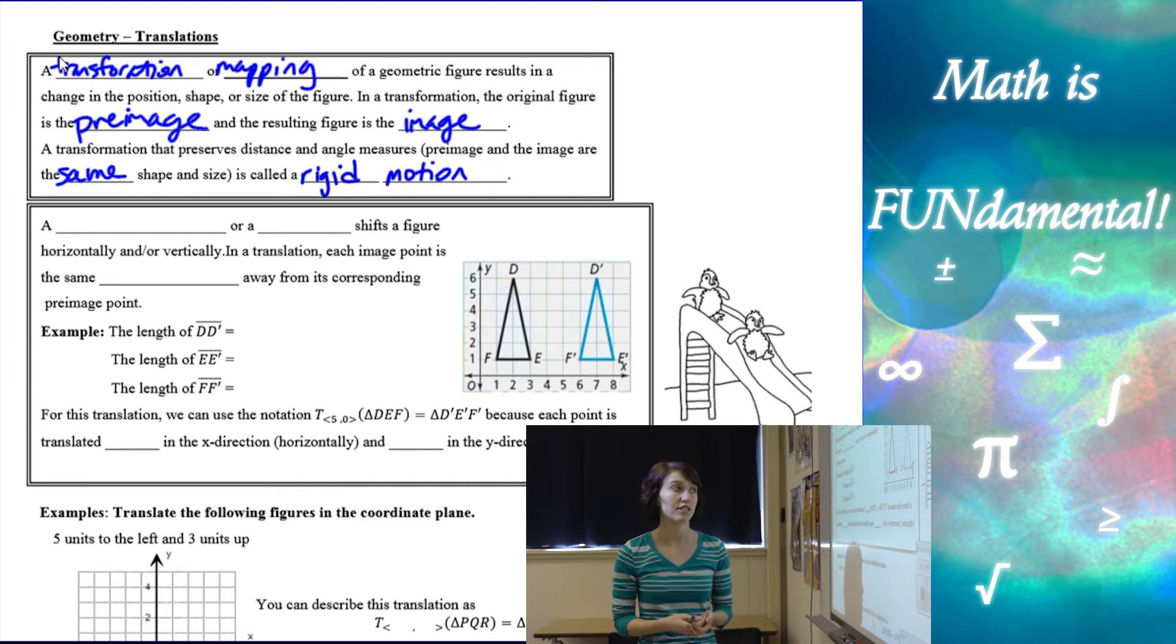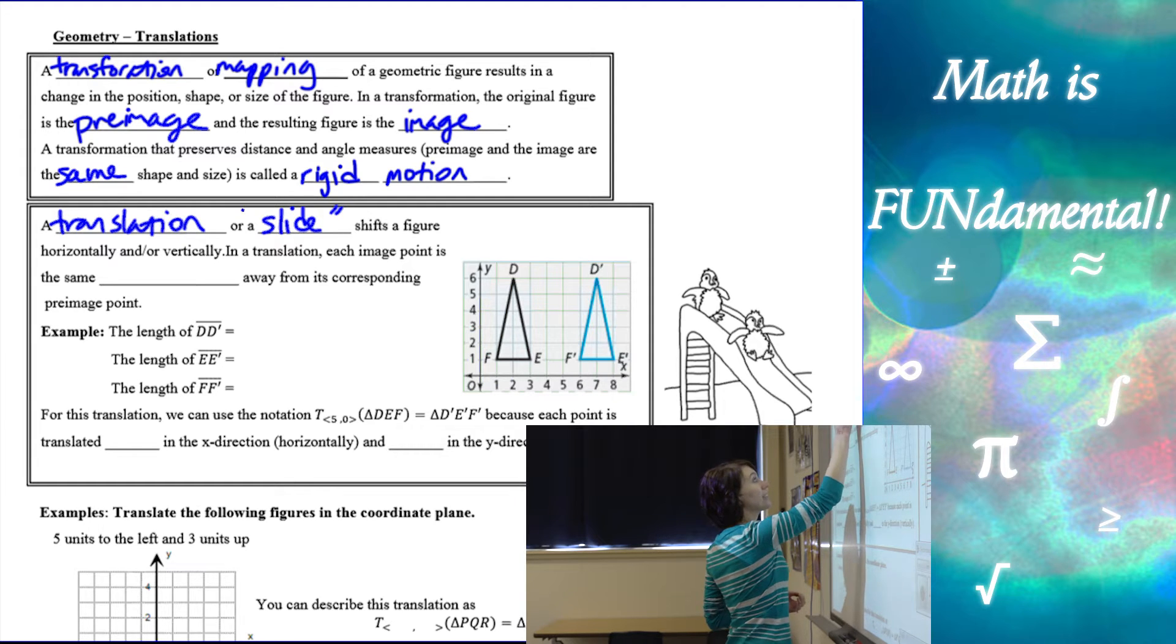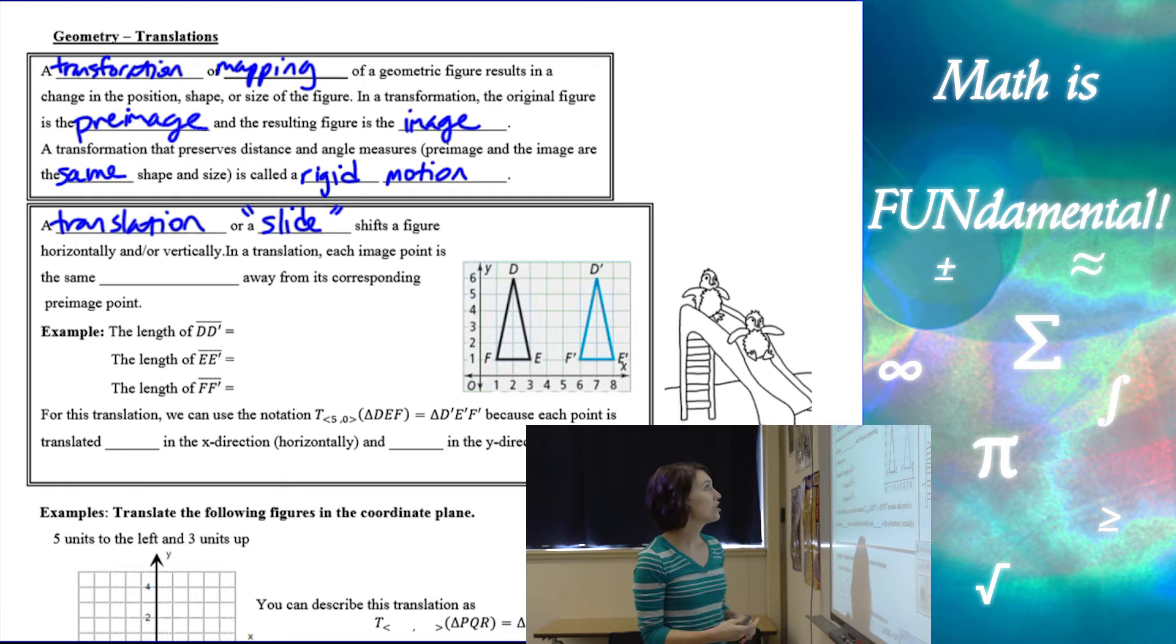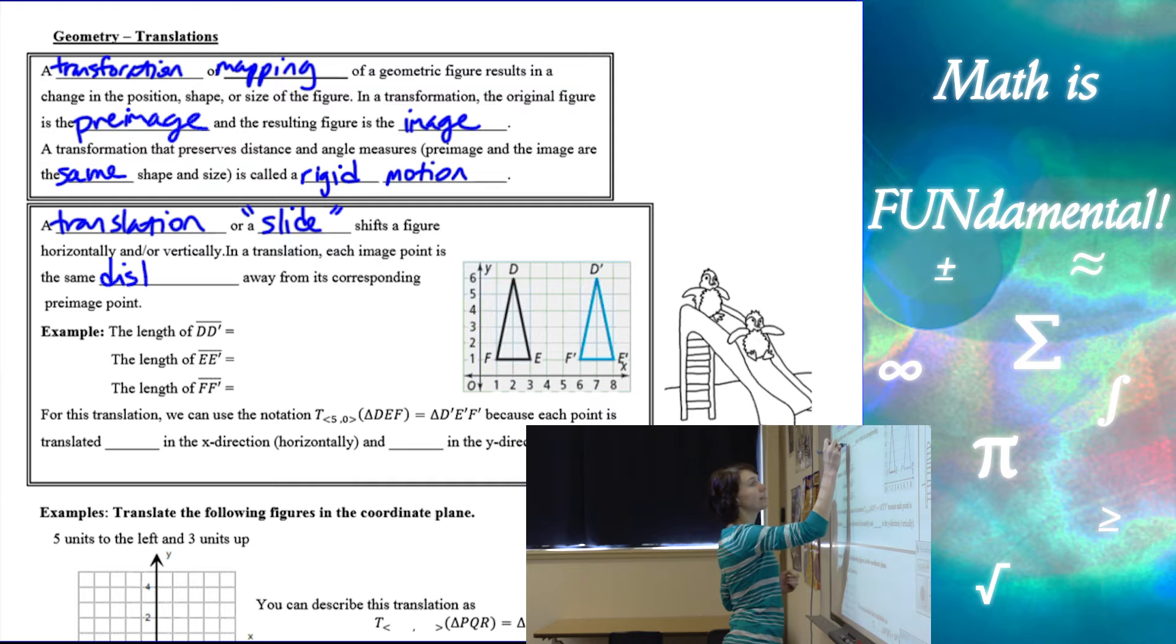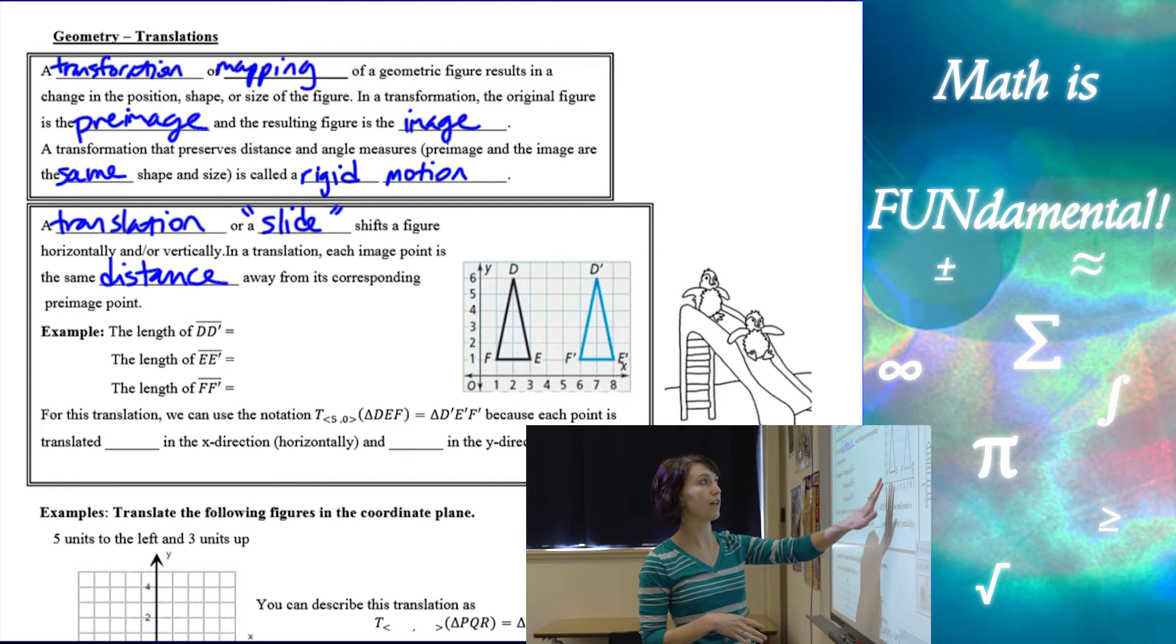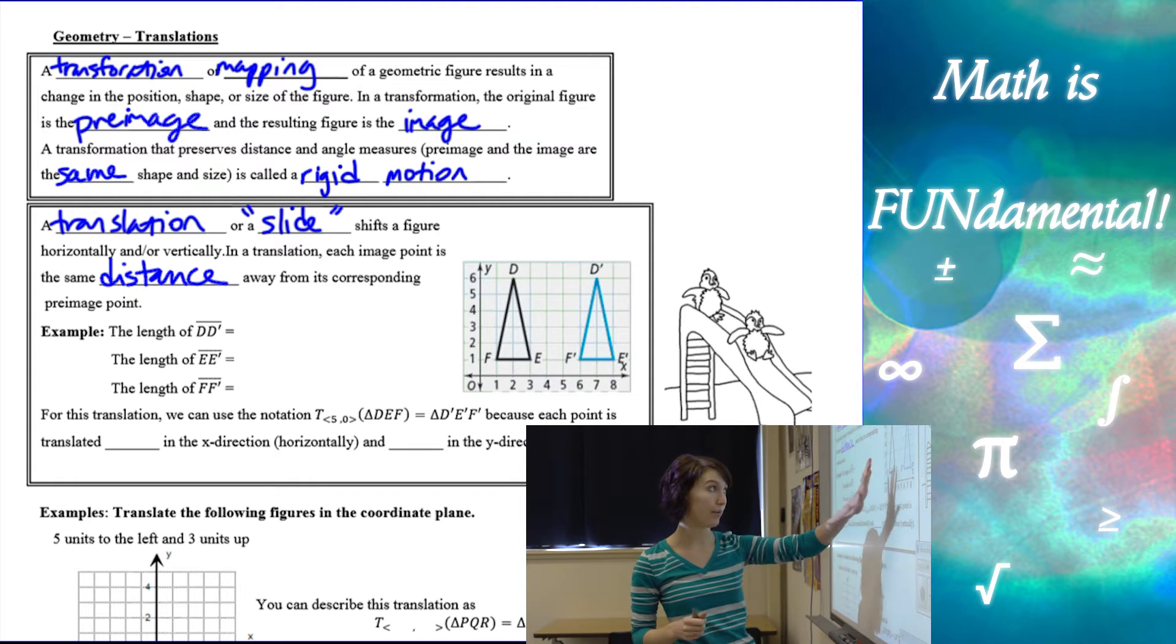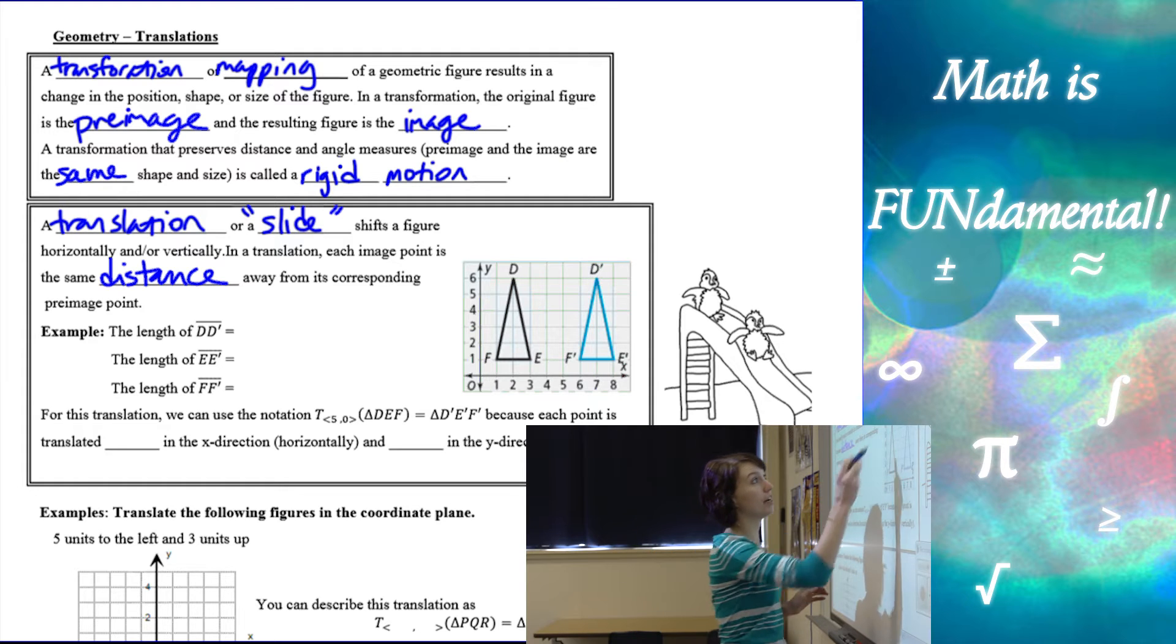Now our first in the set of transformations is what we call a translation. So a translation, or a slide, you can think of as slide, but we always call it a translation, shifts a figure horizontally and vertically. Sometimes you can do both horizontally and vertically, so it kind of looks like it's diagonally. In each translation, an image point is the same distance away from its corresponding pre-image point. So if we look at this translation in the figure, we have triangle DEF and D prime E prime F prime. So we took DEF and we slid it over.